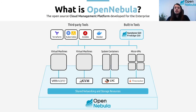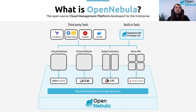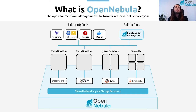OpenNebula is one of the main open source cloud management platforms. The project started in 2010 and the latest version is 6.2. OpenNebula integrates with a huge variety of hypervisors — we support VMware, KVM, LXE, and Firecracker — and because of this you can run virtual machines, system containers, or micro VMs.